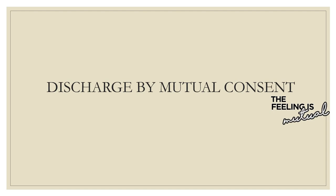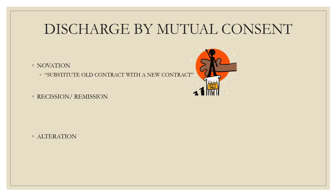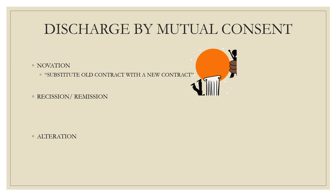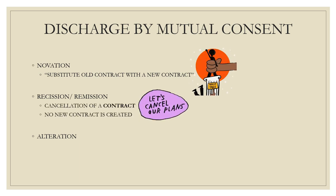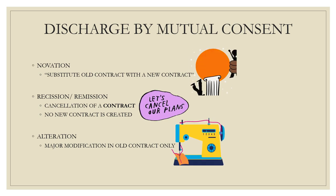Next is discharge by mutual consent. When two parties can create a contract with free consent and mutual consent, they can also finish that contract by mutual consent. There are three methods: novation, rescission (also called remission), and alteration. Novation means the previous contract ends and a new contract is made. Rescission or remission means the previous contract is cancelled and no new contract is made. Alteration means we keep the old contract but modify it — the new contract is not made, it is only a modification.